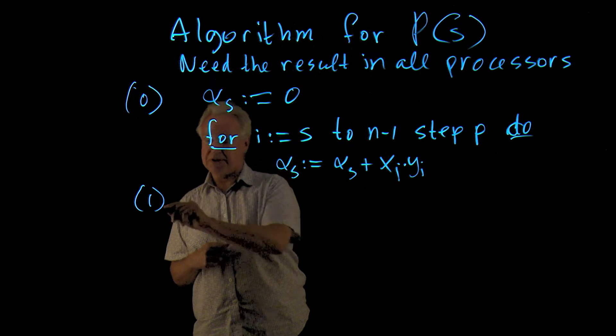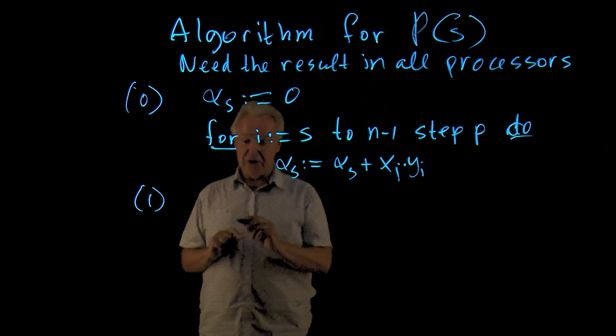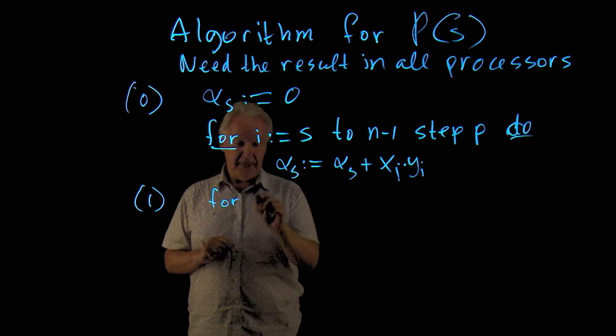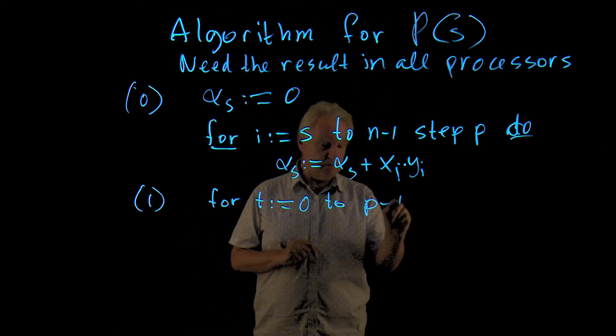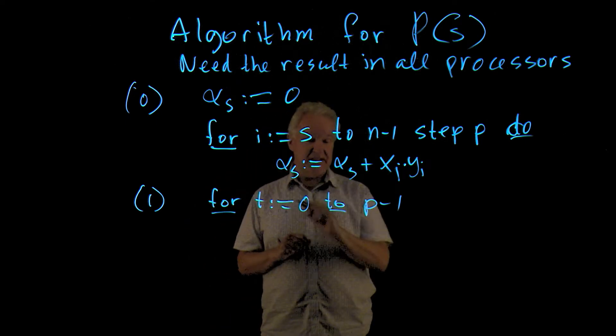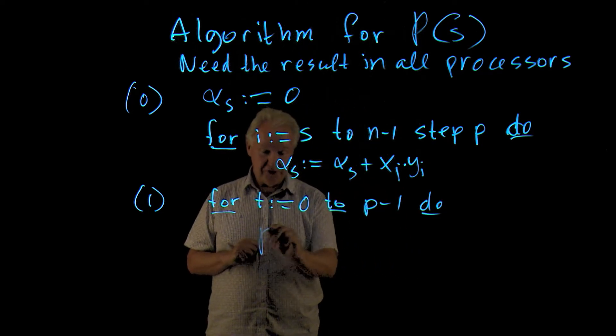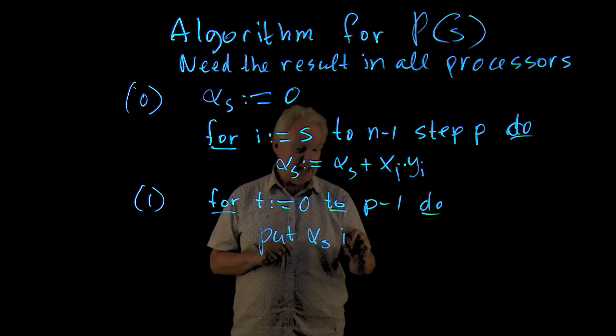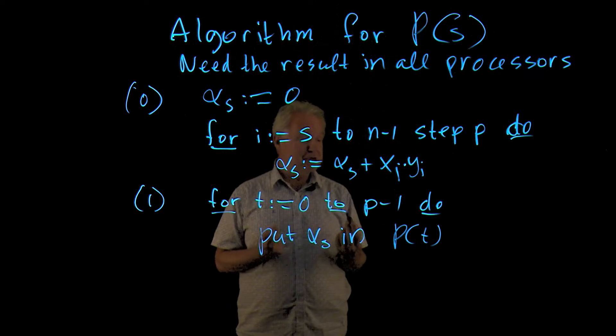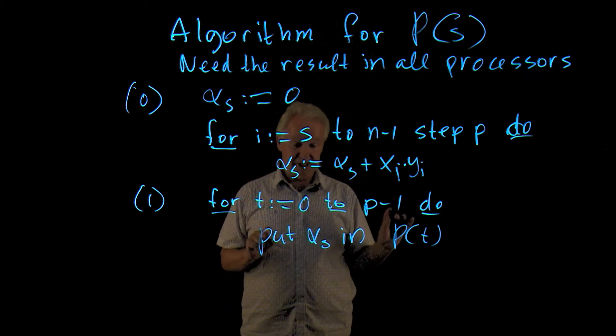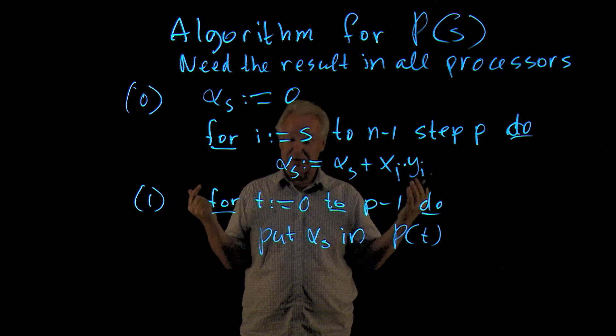And then we can do super step 1. I don't write the syncs in between, but there's a sync. Now we have the local result. We want to put it into all the processors for T equals 0 to P minus 1. And then we do the following. We put alpha S in processor T. So T is the target processor. And this way, every processor has my value alpha S. This is my program as a processor number S.